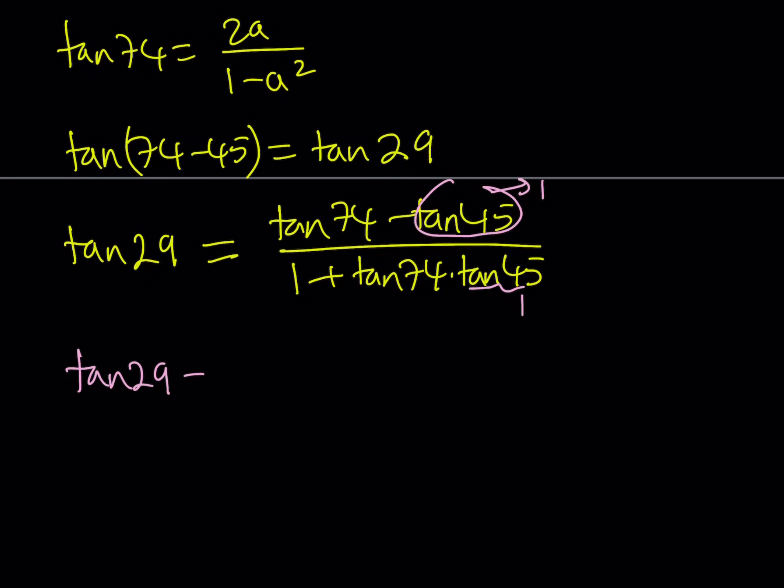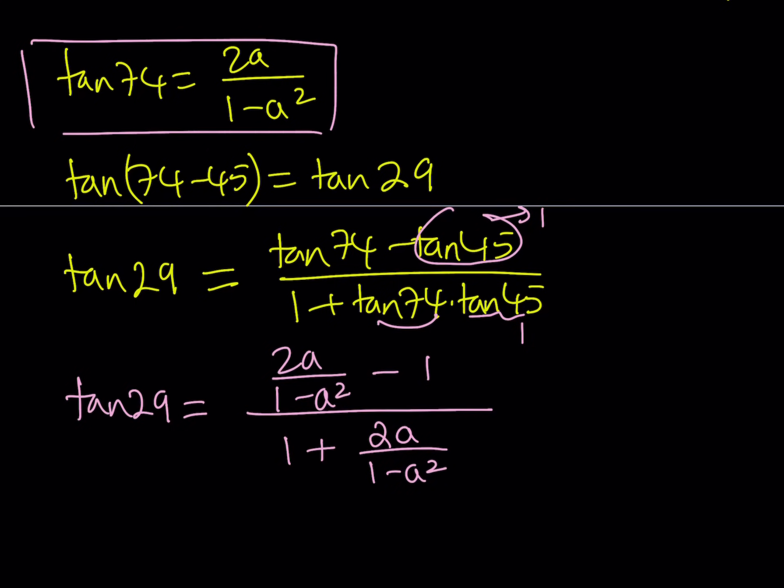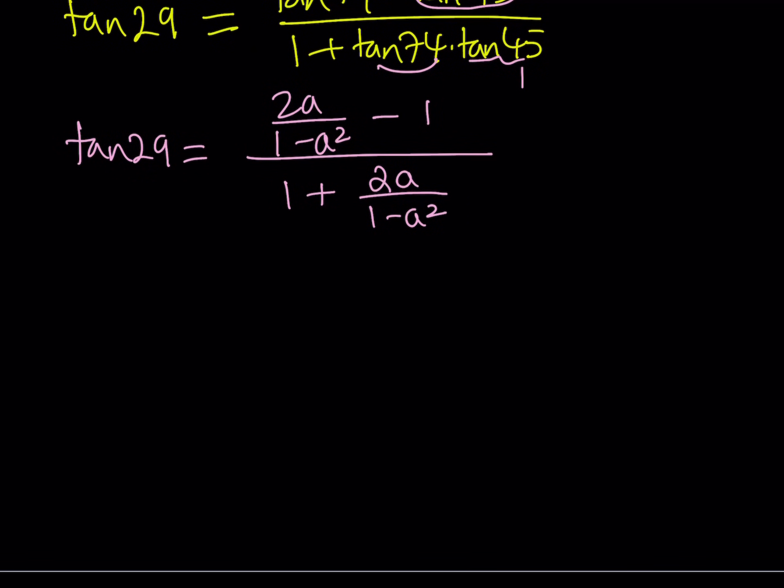Tangent 29 is equal to tangent 74, we found it as 2a over 1 minus a squared. So in terms of a, let's go ahead and replace that. Minus 1 divided by 1 plus tangent 74. When you multiply tangent 74 by 1, you're going to get tangent 74. And that's going to be our expression for tangent 29.